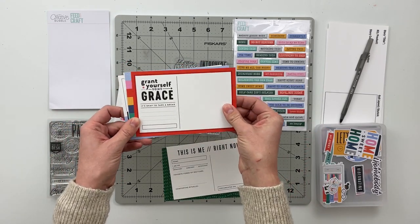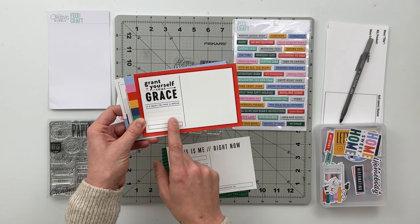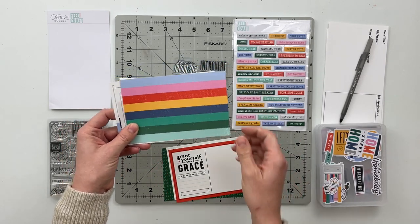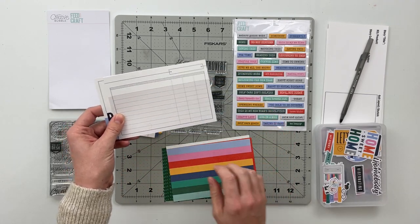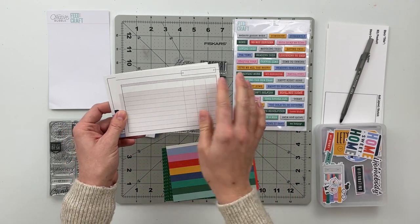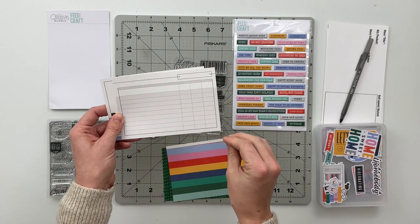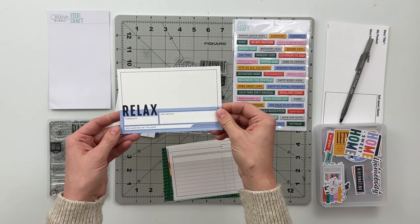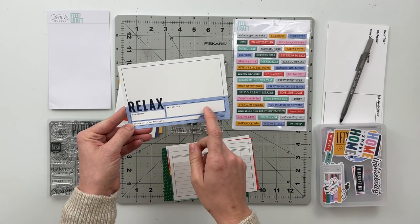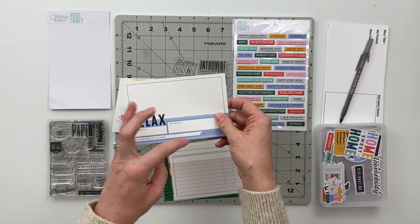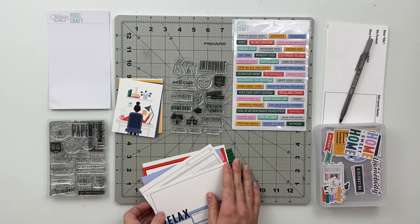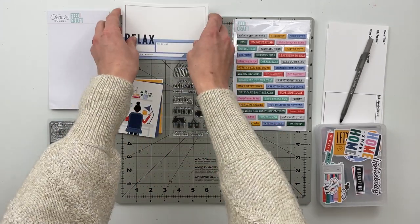Grant yourself some grace. It's okay to take a break. Again a place for journaling, a place for a photo, this pattern which would be really great as a title card for Project Life. We've got a journaling card that looks kind of like a ledger here and then this one that says relax with currently, the details, documented on this date and another place where you could put a photo or more journaling if you wanted to. So those are the four by six cards.